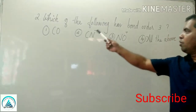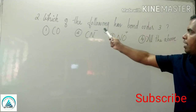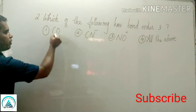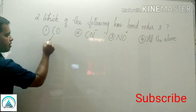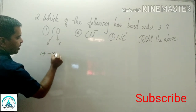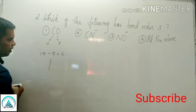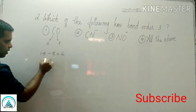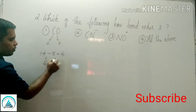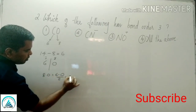Our second question: which of the following has bond order 3? Apply the shortcut for calculating bond order. Carbon atomic number 6, oxygen atomic number 8, total number of electrons 14. Subtract 8 electrons, remaining 6 electrons. Part 1 can accommodate a maximum of 6 electrons; remaining electrons in part 2 is 0. Bond order = (6 minus 0) divided by 2 = 3.